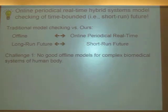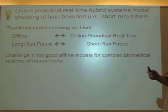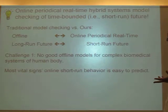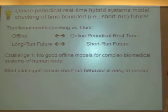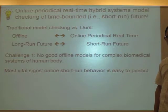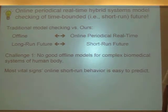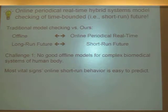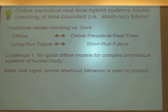How does this deal with the two challenges? Challenge number one: no good offline models for the complex biomedical system of the human body. We find that if we do things online, most vital signs' short-run behavior is quite easy to predict. Take blood oxygen level for example — although it is affected by many factors, if we carry out online periodical model checking with a period of one or two seconds, it is usually quite easy to predict the blood oxygen level for the next one or two seconds. We can use very simple tools like linear regression to predict. The blood oxygen level is almost independent of other factors; just using linear regression, you can predict it for the verification period.